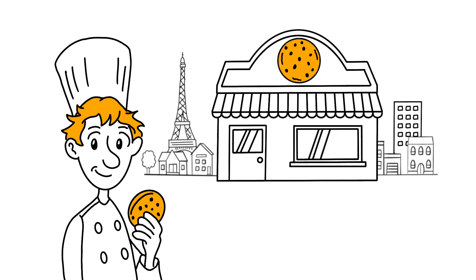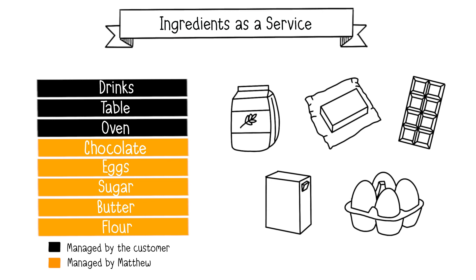Let's explain these usage models with an example. Matthew is a young chef who opened a business to provide services for all your chocolate chip cookie cravings. Matthew offers a range of services to meet all your needs. In the first model, called Ingredients as a Service, Matthew supplies clients with all the necessary ingredients on demand. He takes care of providing all the necessary ingredients to make the dough, so the client no longer needs to go shopping — Matthew delivers the ingredients regardless of the quantity requested, whether it's for 10 cookies or 1,000 cookies.